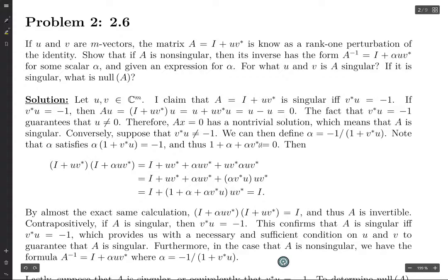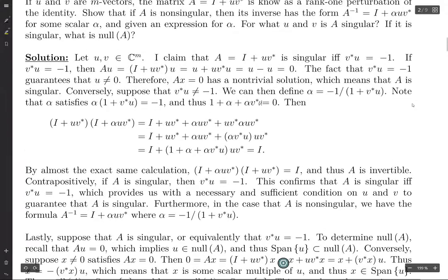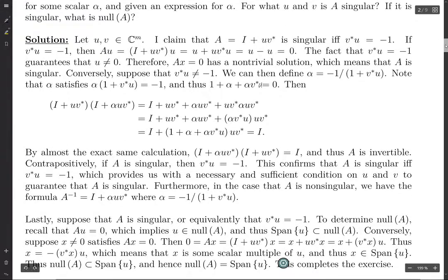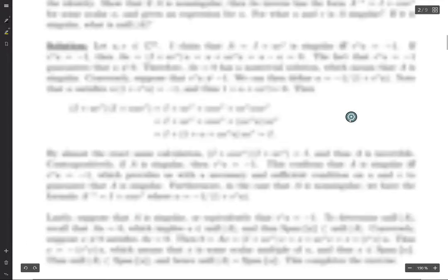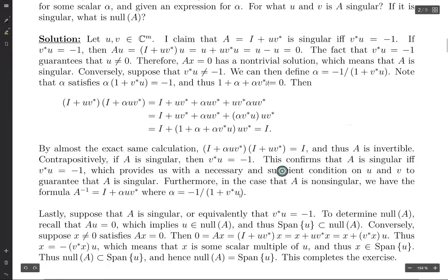And so that's almost the entire problem. And the last thing is, if A is singular, then what is its null space? So suppose that A is singular. That's equivalent to V star U being negative 1. We've proven that already. So to determine the null space of A, first of all, we have A times U equals 0. Because we proved that up here, that A times U equals 0. So the vector U must be in the null space of A.